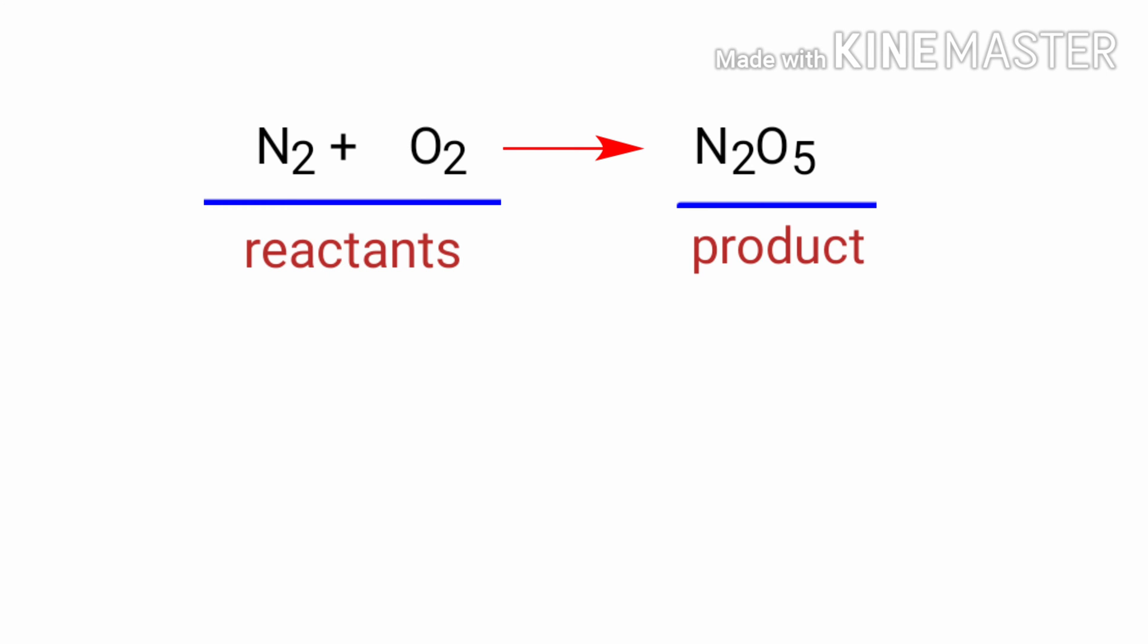In this equation, the reactants are nitrogen and oxygen and the product is dinitrogen pentoxide.